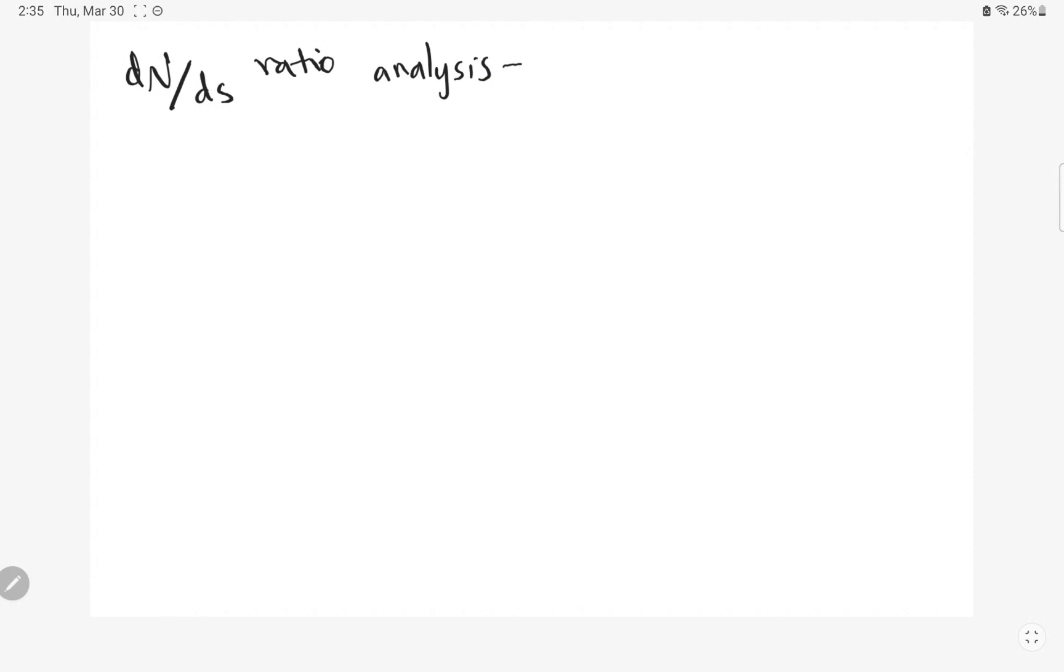One of the most widely used methods for detecting positive selection is to compare the rates of non-synonymous, that's DN, and synonymous, that's DS, substitutions in a gene between different species. A DN over DS ratio greater than one suggests positive selection, while less than one suggests purifying selection.